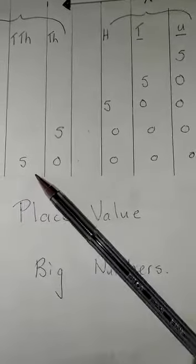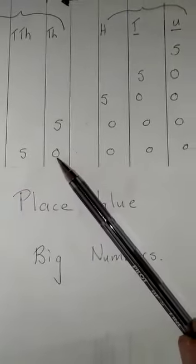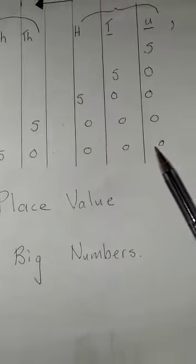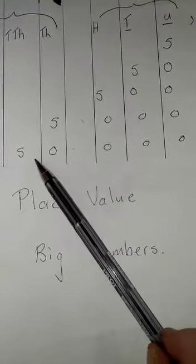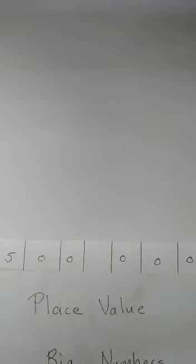Over here we have the number 50. 50 what? 50 thousand. This number over here, you can clearly see that there are six numbers, so we have five hundred thousand.